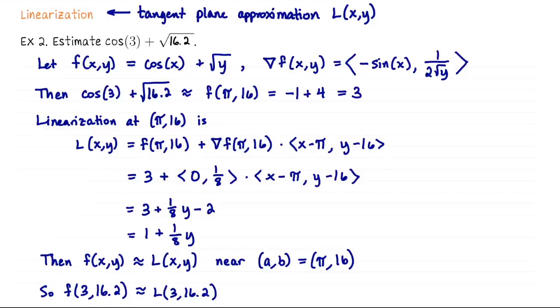Plugging 3 and 16.2 into L: cos(3) + √16.2 ≈ L(3,16.2) = 1 + 16.2/8 = 3.025.